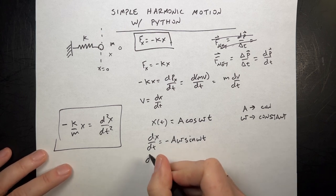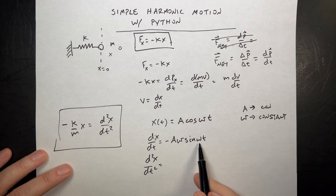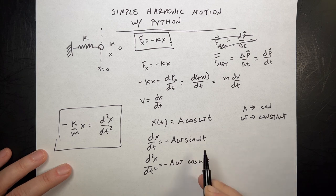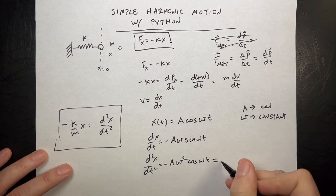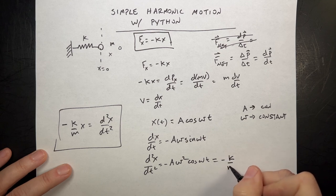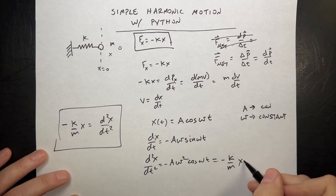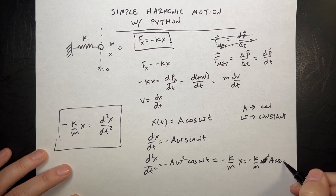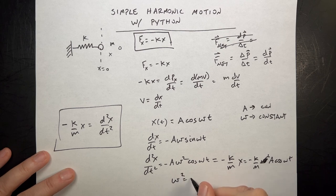Now let's take the derivative again. The second derivative of x with respect to time: I take the derivative of sine(ωt), which is cosine(ωt), so I get negative A ω cosine(ωt). Then taking the derivative of the inside again gives another ω, so I get negative A ω² cosine(ωt). Setting that equal to negative k/m times x — which is A cosine(ωt) — this is true if ω² equals k/m.